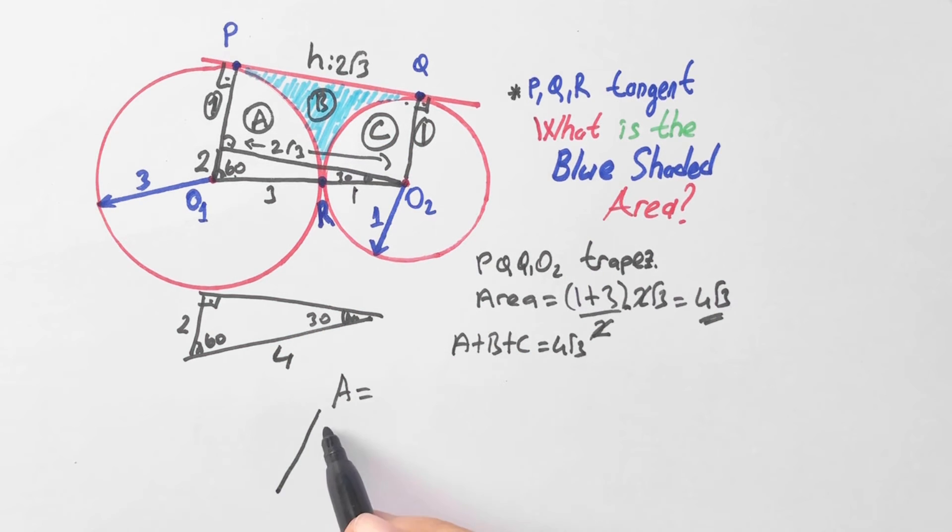How we can calculate area A? Let's draw here. Angle is 60 degrees and π over 6 because A is 1/6 of the circle.